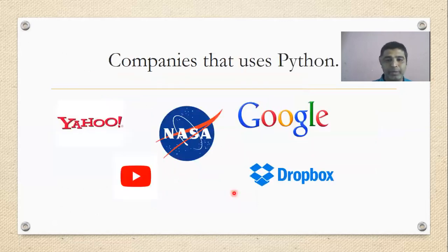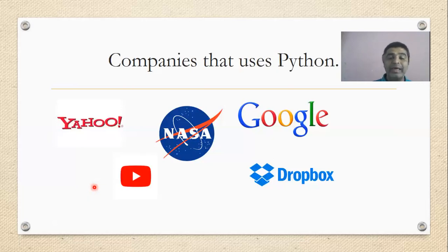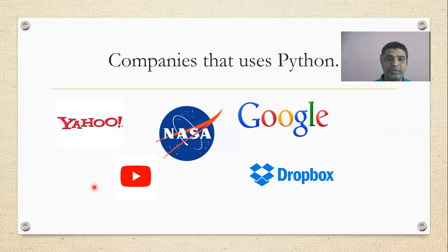Which companies use Python? There are many companies: HP, Yahoo, YouTube, NASA — which is written using Python — Google, and Dropbox are all using Python. All these companies either use Python as a primary language or as a supporting language. There are many companies using Python as a primary language to develop websites and portals, and the popularity of those companies speaks for itself.